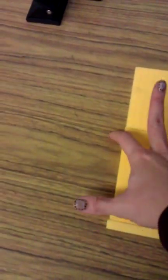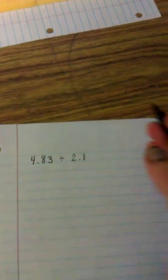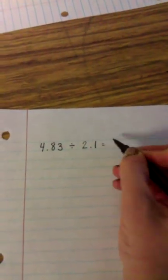So the answer would be the factor that I find right here. And the factor would be 1, 2, and 3 tenths. So my answer would be 4 and 83 hundredths divided by 2 and 1 tenth is, going back over here, 1, 2, and 3 tenths.